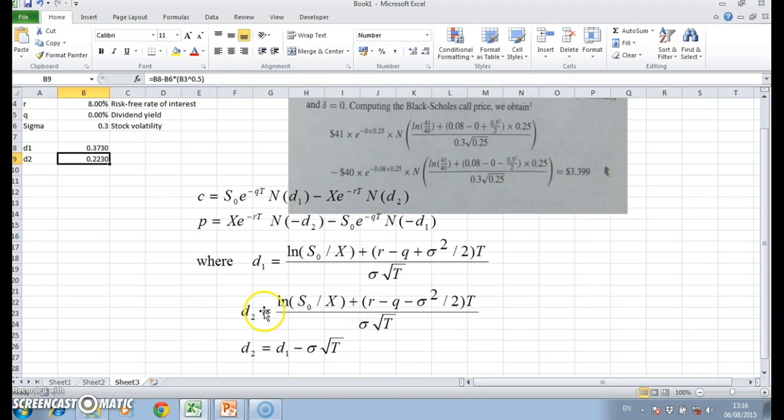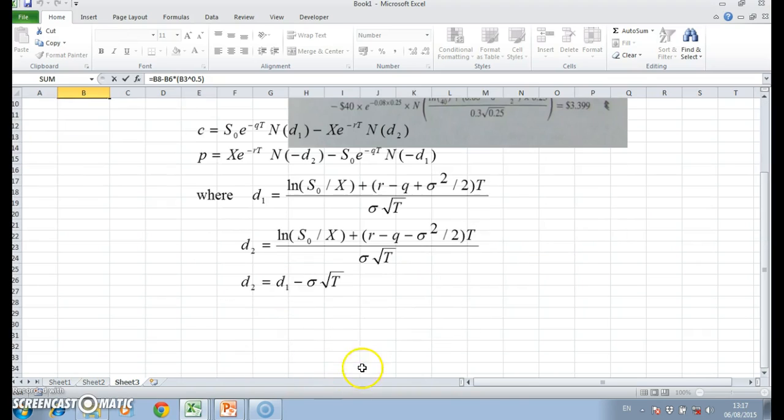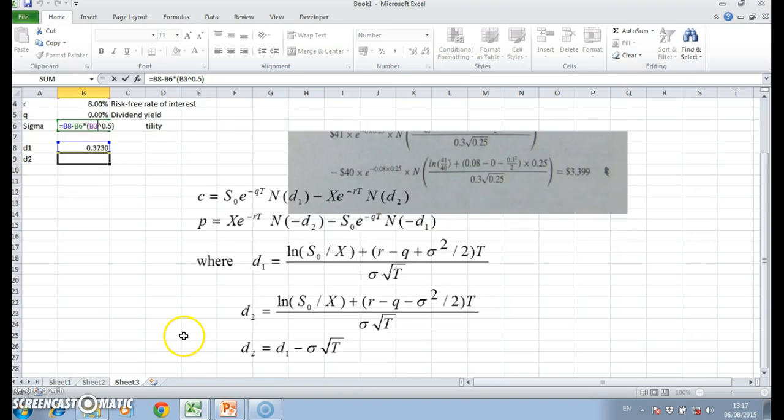So the only difference resides in terms of the positive sigma and the negative sigma from d1 to d2. Or more simply, d2 can be written as d1 minus sigma square root of t, and that's how we performed the calculation here. So d8 minus b6 corresponds with d2 equal to d1 minus sigma square root of t, and we return.